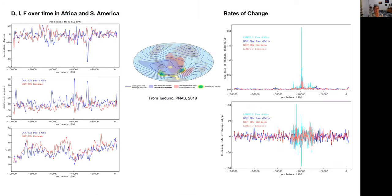We can look in detail at time series based on these models. On GGF 100k, we can look at 100,000 years of variability, in this case in both South America and South Africa. On the left you see the declination, inclination, and field strength. On the right, we see the rate of angular change and the rate of directional change. The takeaway from this is that South America is more active and things vary more rapidly in South America than they do in South Africa.